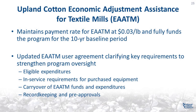Another important Title I cotton program is the Economic Adjustment Assistance for Textile Mills, or EAATM. The 2018 Farm Bill maintains the payment rate at 3 cents per pound and fully funds the program for the 10-year baseline period. The EAATM user agreement was updated and key requirements were clarified to strengthen program oversight, including eligible expenditures and service requirements for purchased equipment, carryover of EAATM funds and expenditures, and record keeping and pre-approvals.